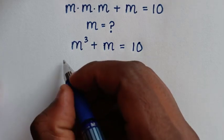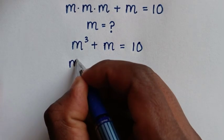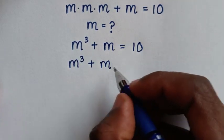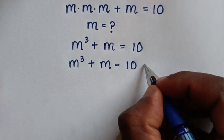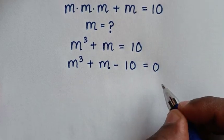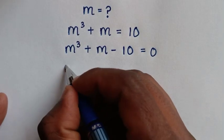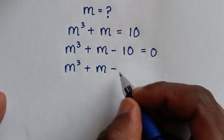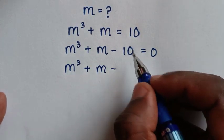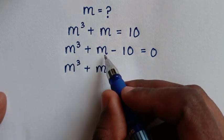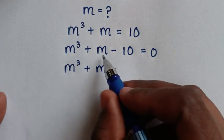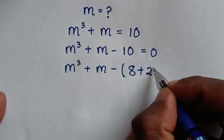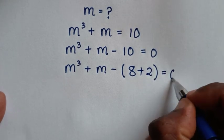In the next step, we take 10 to the left side, so it will be m³ + m - 10 = 0. Then m³ + m, and 10 will split as 8 plus 2, giving m³ + m - (8 + 2) = 0.